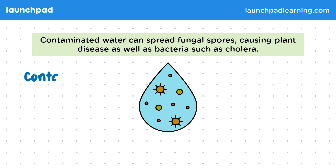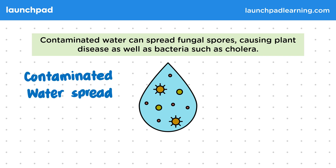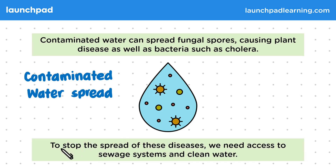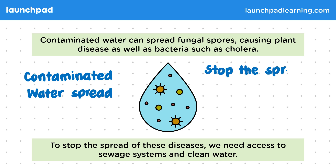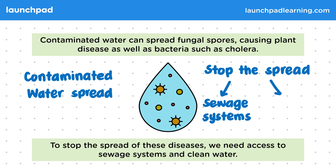Water can be contaminated by many things, including animal faeces, and these pathogens then make us very ill. For example, the cholera bacterium causes diarrhoea and vomiting. To stop the spread of these diseases, we need access to sewage systems and clean water, which limits people getting in contact with contaminated water and reduces the amount of disease spread.